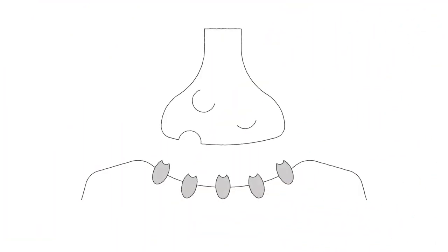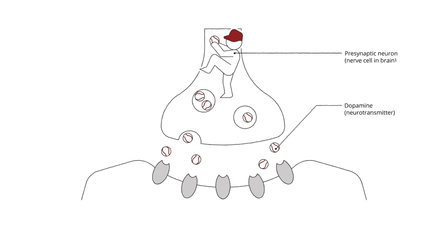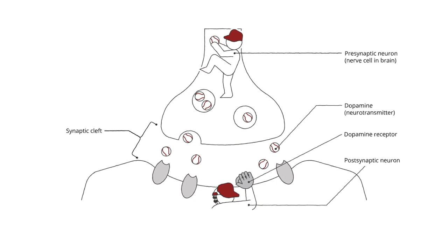Let's start with dopamine. Dopamine is a brain neurotransmitter. Neurotransmitters are like baseballs. The pitcher is the presynaptic neuron or brain cell. The catcher is the postsynaptic neuron. The catcher's mitt is the receptor. And the space between pitcher and catcher is the synaptic cleft. After the pitcher pitches the ball, the catcher catches it, and the play is complete.